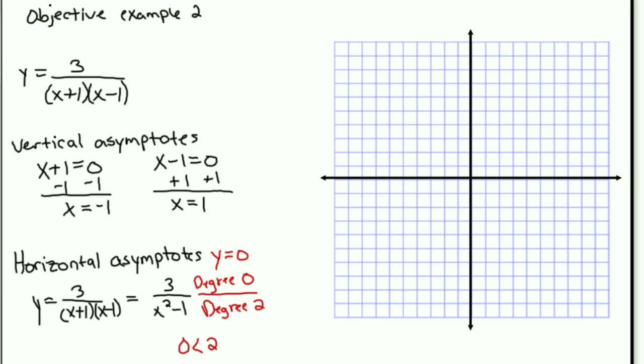So we can go ahead now, come to our graph, and insert our asymptotes. So x equals negative 1, x equals positive 1, and y equals 0.